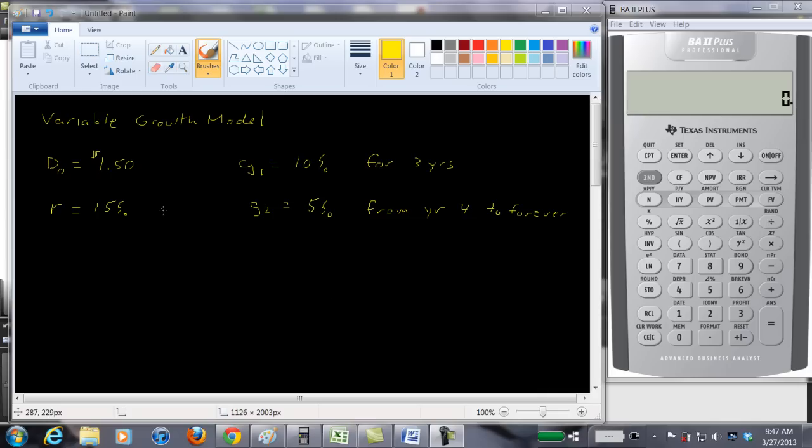The assumption we're going to make here or the example we're going to do is we have a dividend today that was just paid and it's a dollar fifty a share. The stockholders require a fifteen percent return and here we're going to have a growth rate for the dividends of ten percent per year for the first three years and then it's going to slow down to five percent from year four on. So from year four forever it will be five percent.